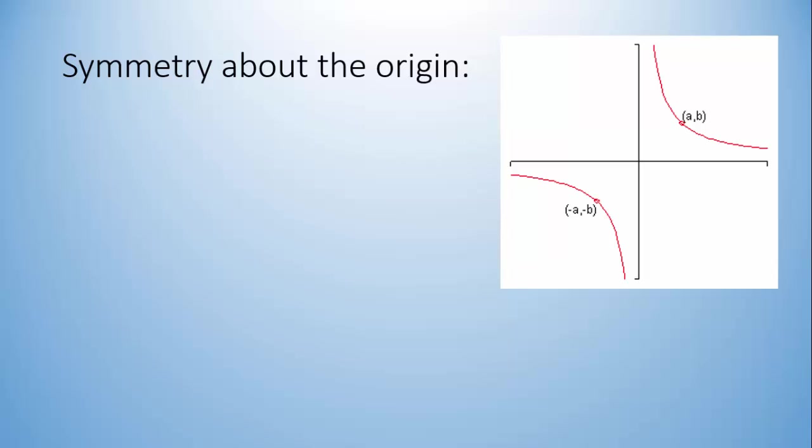Now let's look at symmetry about the origin. This is a little more complicated to think about. You can tell that there's some symmetry going on here, because we could fold this a few ways and these two graphs would line up on each other. This is a rotational symmetry.